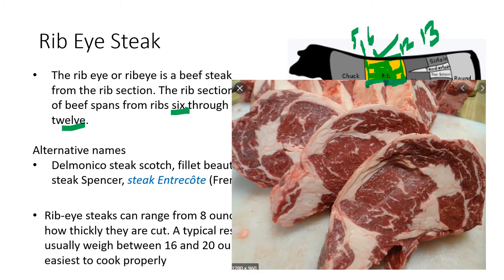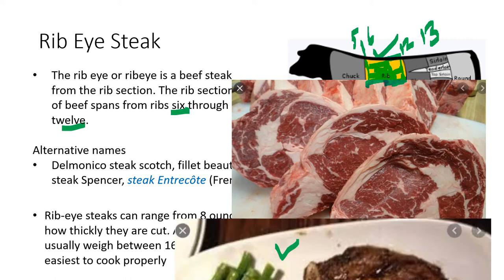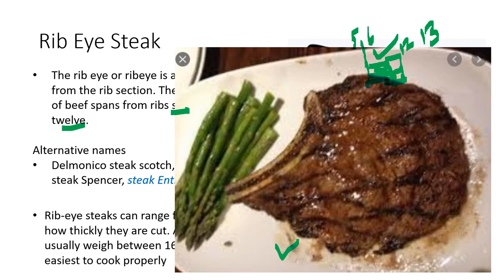The rib eye steak is a cut of meat adjoining the rib — it does not need to include the rib bone, though a grilled rib eye can include the bone. It is a pretty large and chunky cut, which is why 480 grams is not unusual. Steaks between 1 to 2 inches thick are easiest to cook properly.